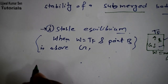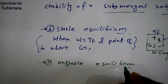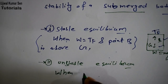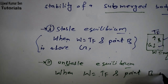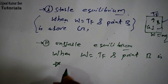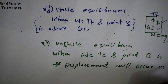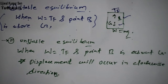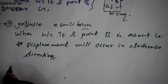The next condition is unstable equilibrium. Here, W is equal to TF, but point B is below G. In this case, displacement will occur in the clockwise direction. This is the condition for unstable equilibrium.